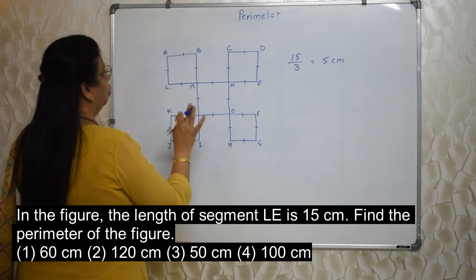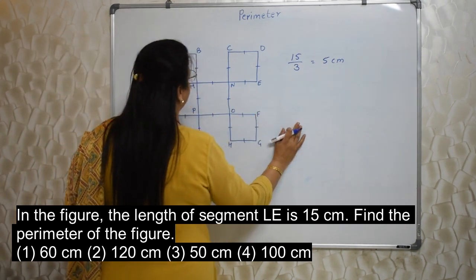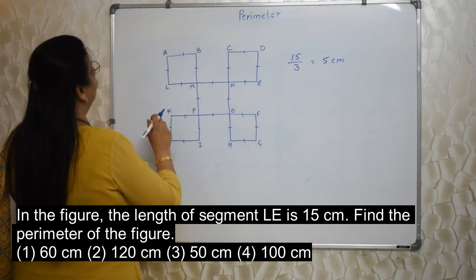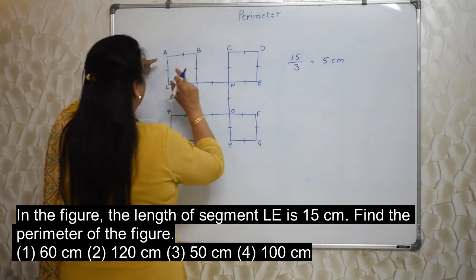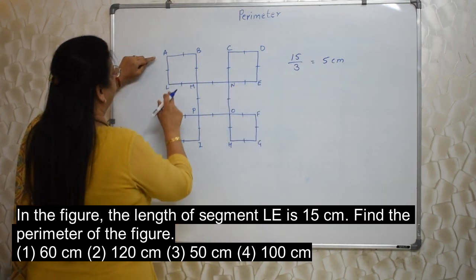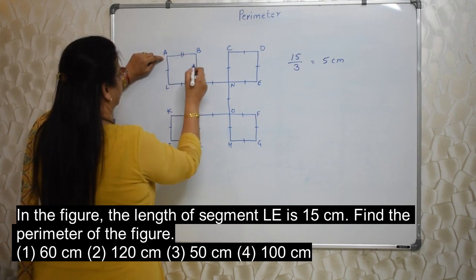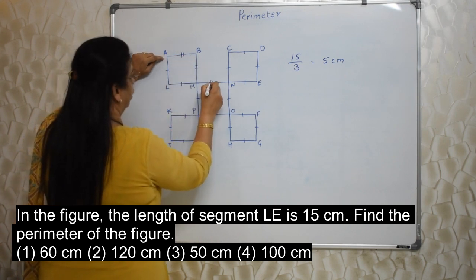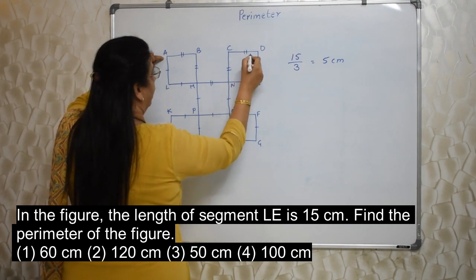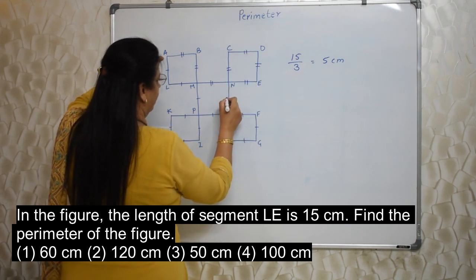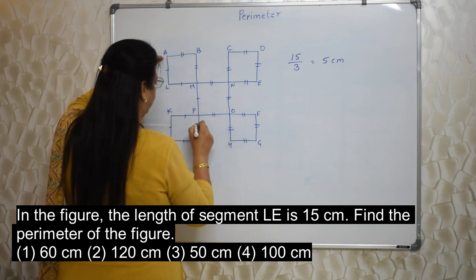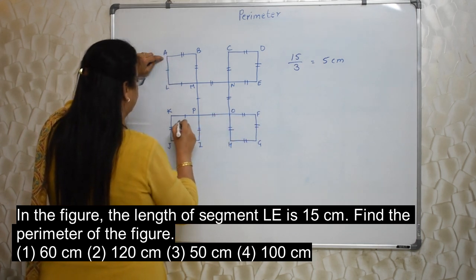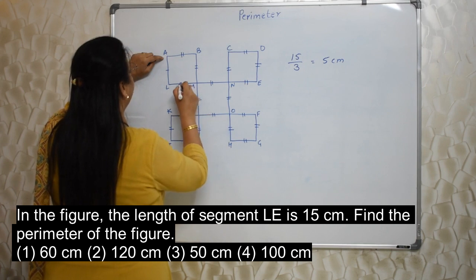Once we know this, to arrive at the final answer is not difficult at all. We need to find out how many such 5 centimeters are involved in this figure. So, let's find out 1, 2, 3, 4, 5, 6, 7, 8, 9, 10, 11, 12, 13, 14, 15, 16, 17, 18, 19, 20.